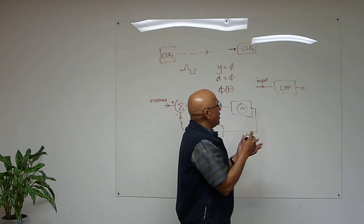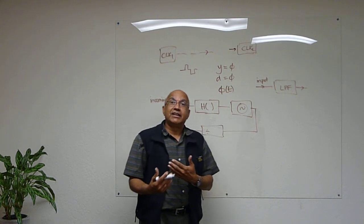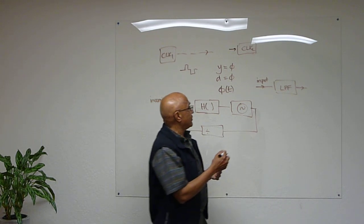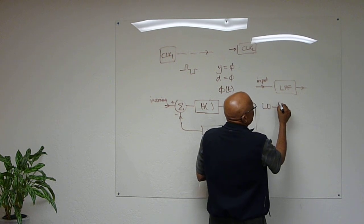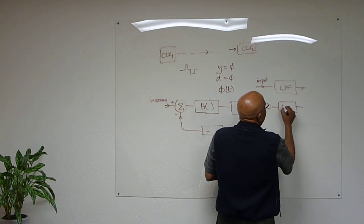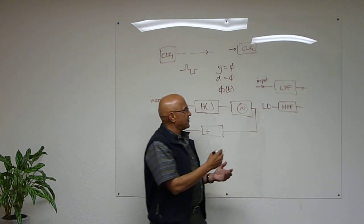But what is often forgotten is that this local oscillator itself may be generating some noise. So you have the local oscillator noise, and that sees a high-pass filter.